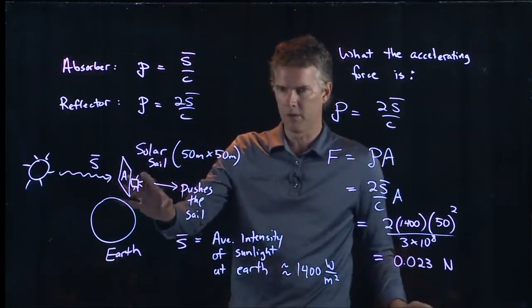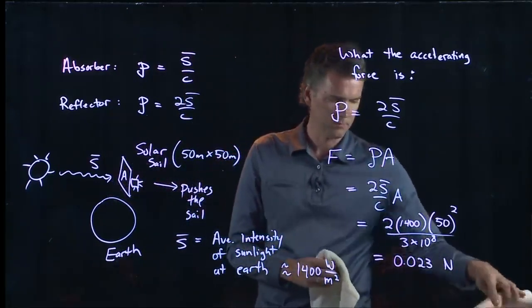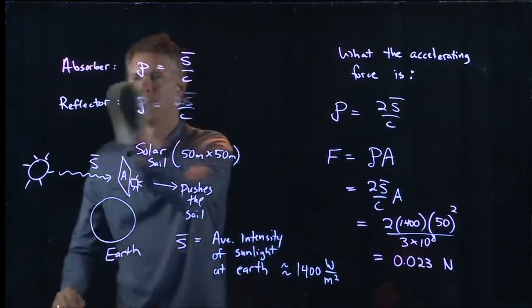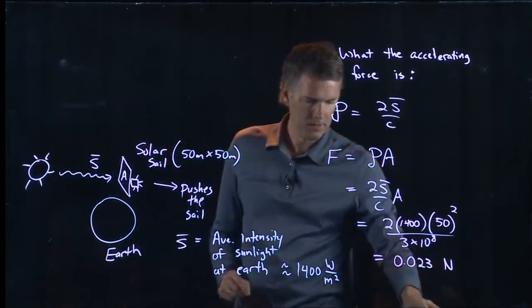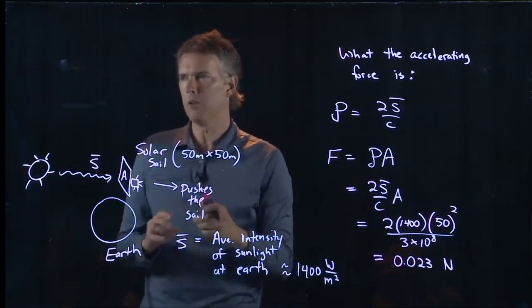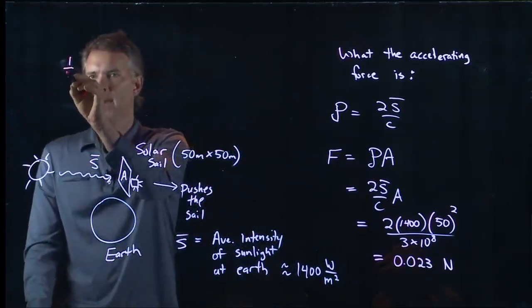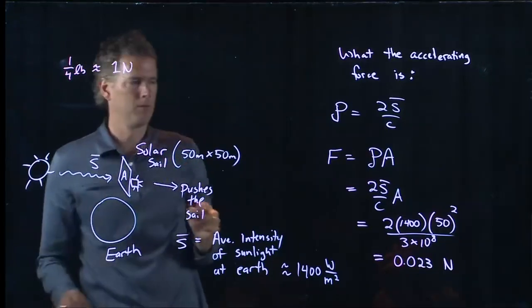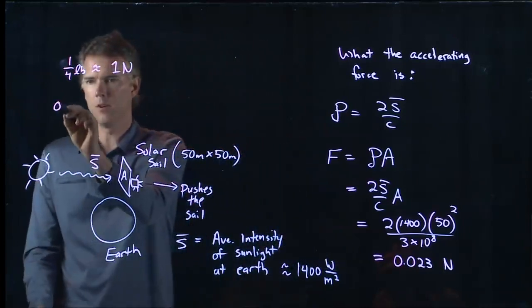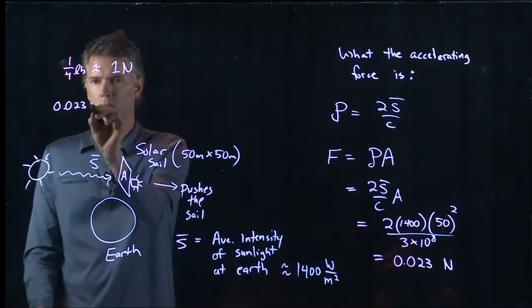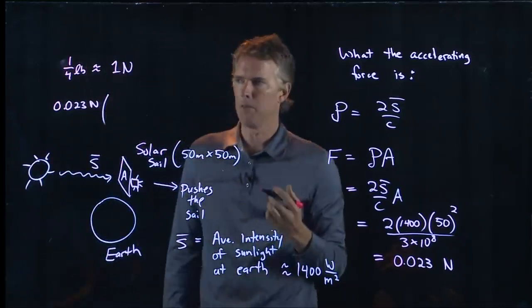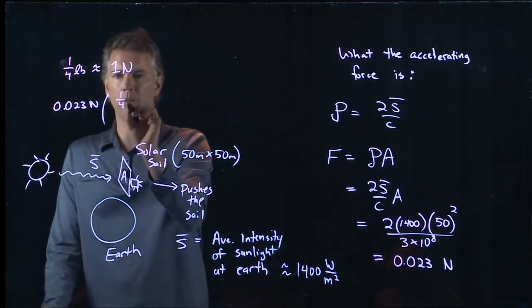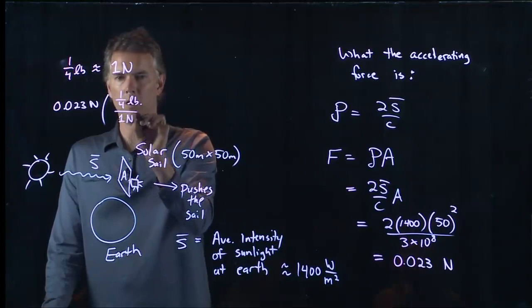So that's the force on this sail. That doesn't seem like a lot of force. That seems like a pretty small number. Let's put this into comparison of something we know. What we know is that a quarter pound is about 1 newton. So if I have 0.023 newtons and I want to convert that to pounds, all I have to do is multiply by 1. So it's a quarter pound over 1 newton.